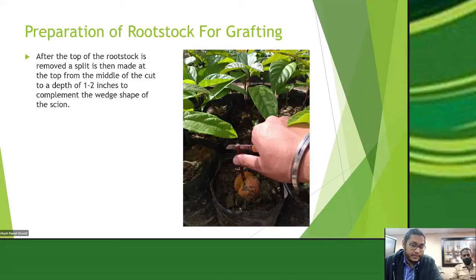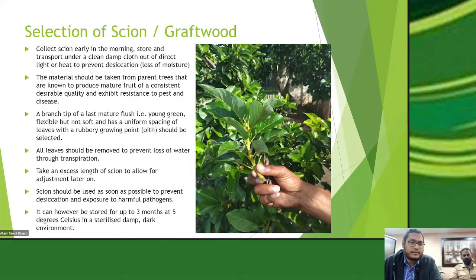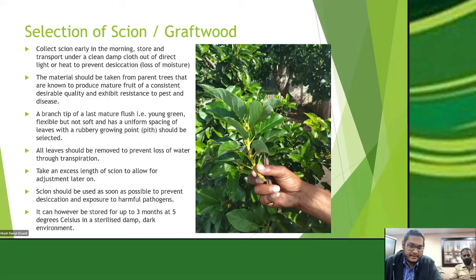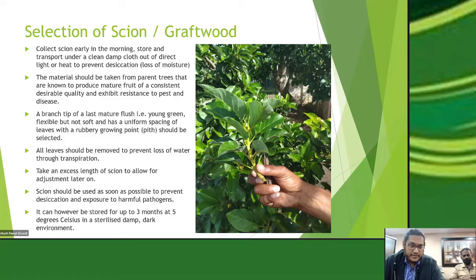The scion, or graft wood, is a mature tip taken from a mature plant. The best time to take it is early morning when the plant is under the least amount of stress. Transport it in a closed container with a damp cloth to keep it out of direct heat and light, to prevent desiccation — which is the loss of moisture. The material should be from a parent tree known to produce mature fruit of consistent and desirable quality, whether for large fruit size, large quantity, or resistance to pests and disease.